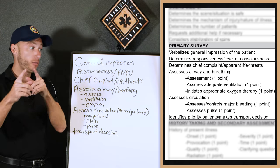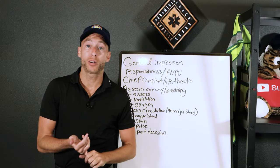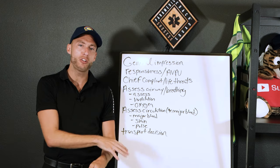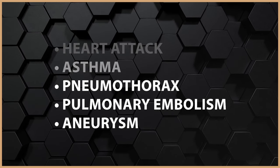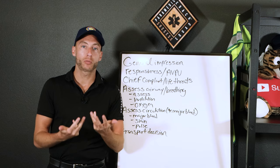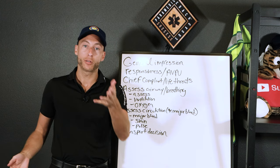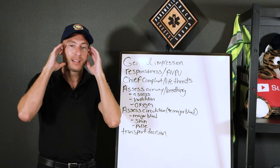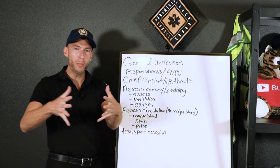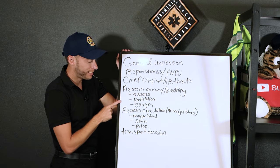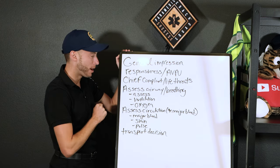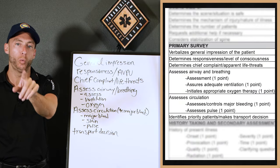Chief complaint: chest pain, can't breathe. What life threat comes to mind? Heart attack — but critically think further. It could be asthma, a pneumothorax, pulmonary embolism, an aneurysm, anaphylaxis, a COPD flare-up, or a CHF flare-up. There are so many possibilities. We figure it out by assessing ABCs for life threats, then getting a history and asking more questions, tying it all together with signs and symptoms.